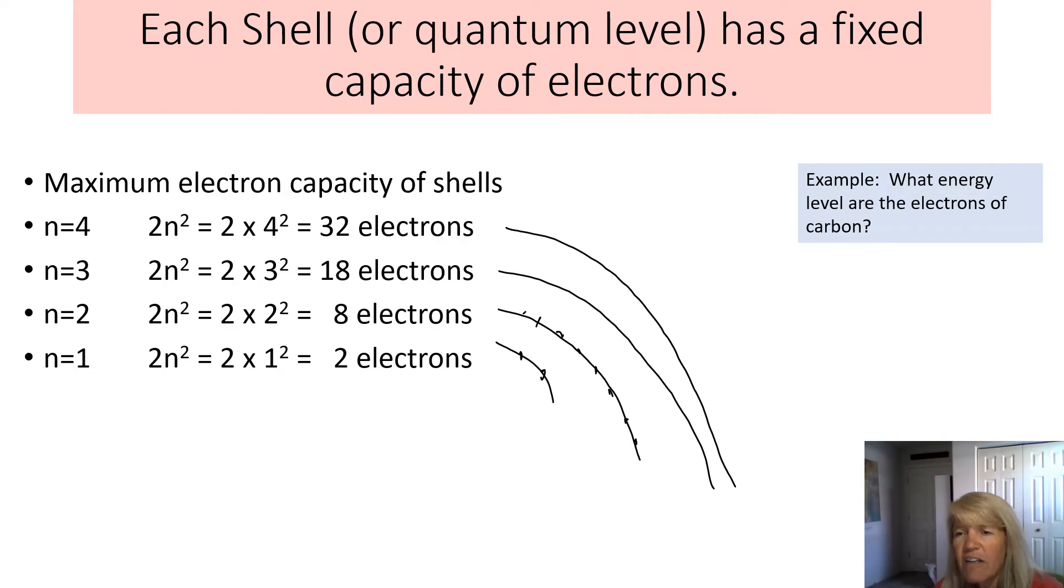So for example, what energy level are the electrons in carbon? So if you go to your periodic table and you look up carbon. Carbon has an atomic number of six. So there's six electrons. Well, where are they going to go? You always want to fill the first level first. So n equals one is going to have two electrons for carbon. So that takes care of two of them. Now we have four left. So n equals two is going to have four electrons for a total of six electrons in carbon. So that's assigning each of the electrons to an energy level. The lowest level fills first, then you move up to the next level.